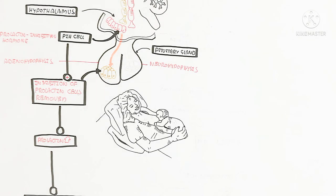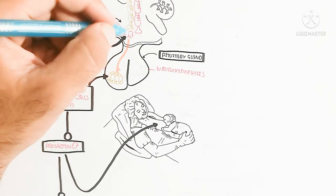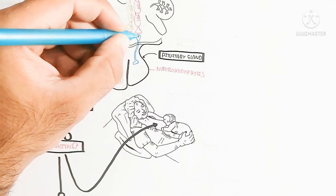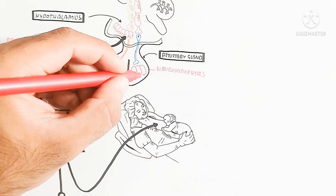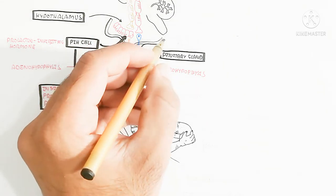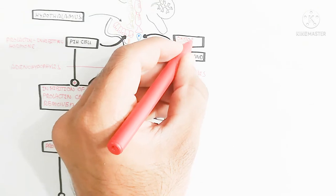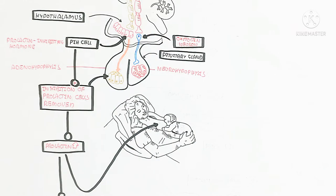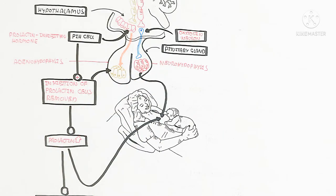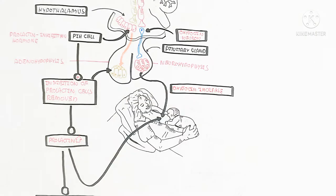The PIH cells' inhibition is removed due to several conditions — for example, the weeping of the child as well as other physiological and physical changes. On the other hand, oxytocin is released from oxytocin neurons, which stimulate the hypothalamus to the pituitary gland, specifically the neurohypophysis, increasing oxytocin production.